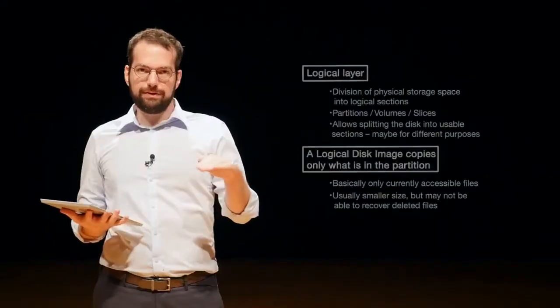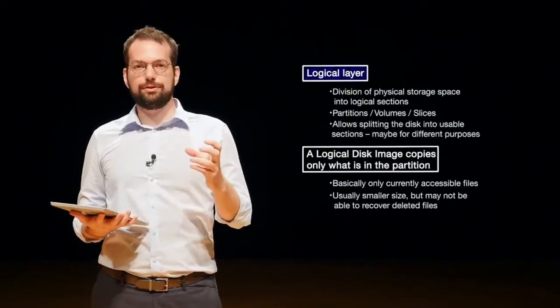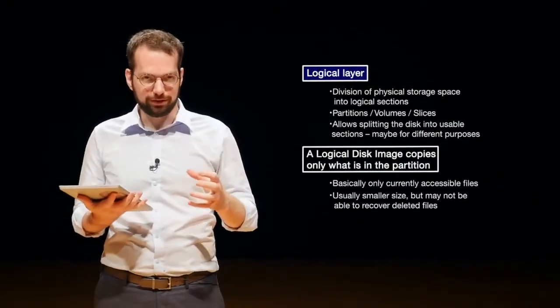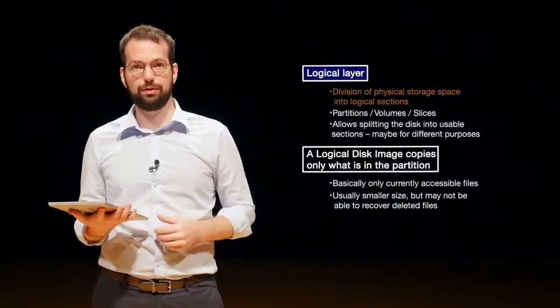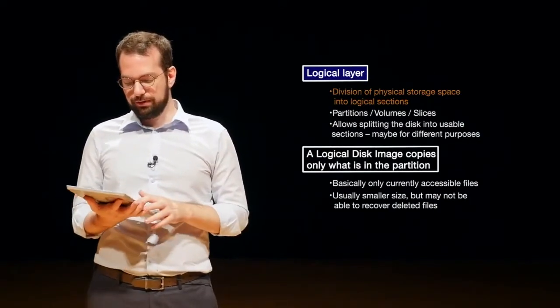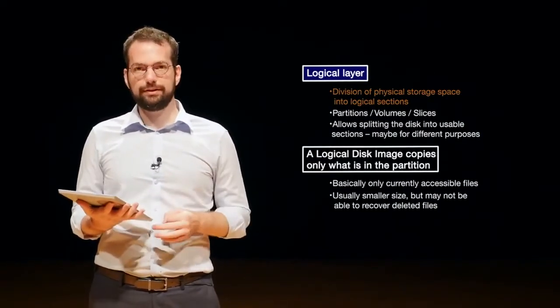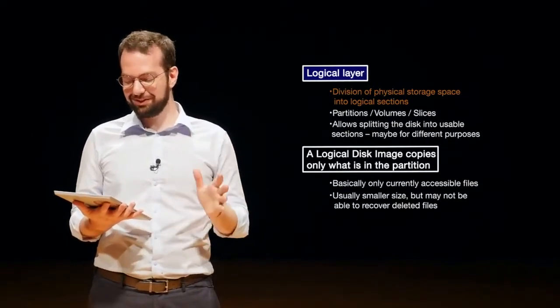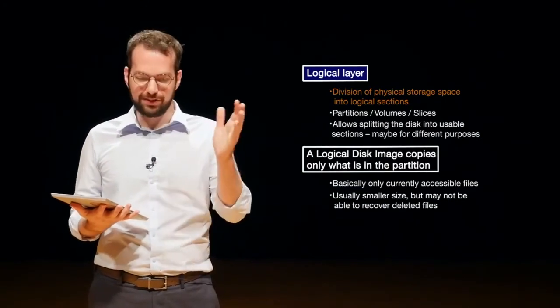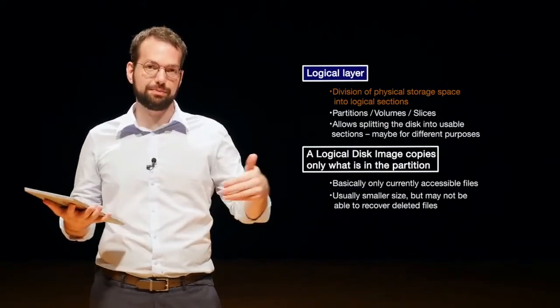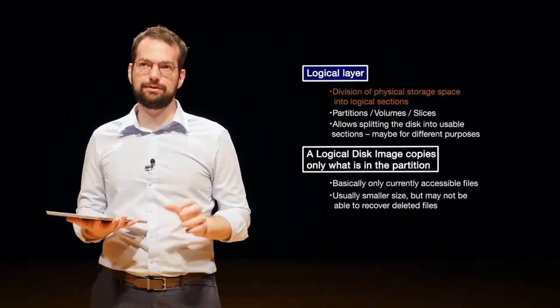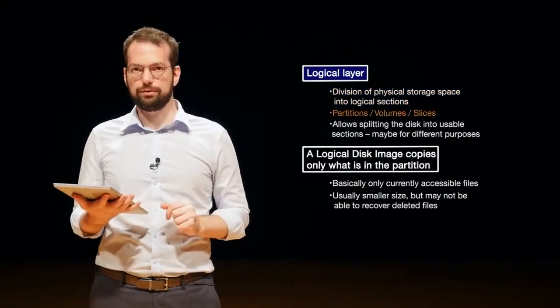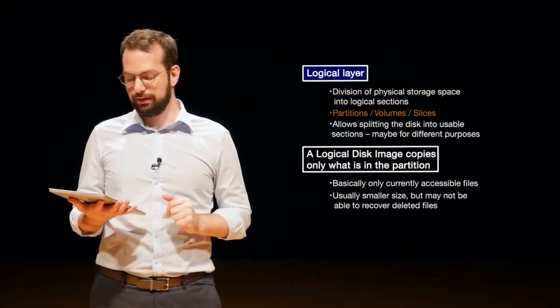The next layer after the physical layer, we have something called the logical layer, or the layer at which we need to configure the physical disk to be able to use it to store data or information. The logical layer is defined as a division of physical storage into logical sections, basically splitting up the storage space to use the storage space for different things. There's lots of different reasons we might have logical disks.